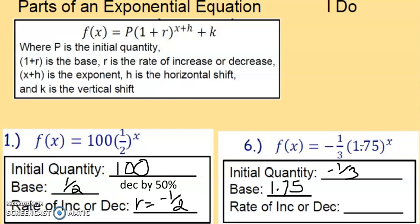This is bigger than 1, the base. So that means it's going to be an increase. It increased by 0.75. So that means it increased by 0.75%.